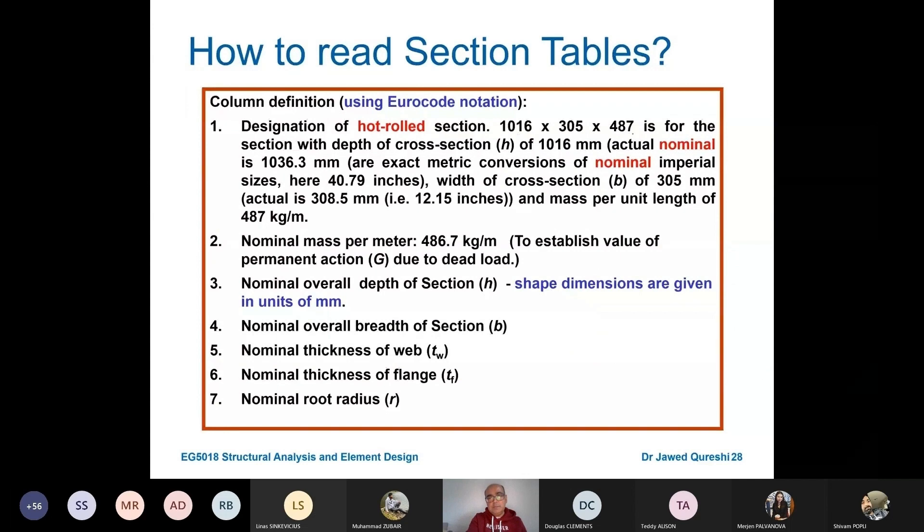Designation, this hot rolled 1016x305x487, is for the section of overall depth 1016. The actual nominal is 1036. This is the exact metric conversion of nominal imperial sizes. Here it's 40.4 inches, because this has been converted from imperial sizes.